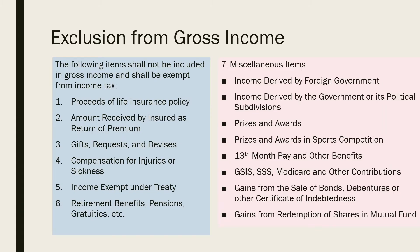The following items shall not be included in gross income and shall be exempt from income tax. We have seven items. First is proceeds of life insurance. Second is amount received by insured as return of premium. Third, gifts, bequests, and devises. Fourth, compensation for injuries or sickness. Fifth, income exempt under treaty. Sixth, retirement benefits, pensions, gratuities, etc. Seventh, miscellaneous income.